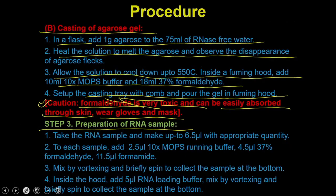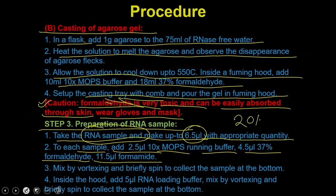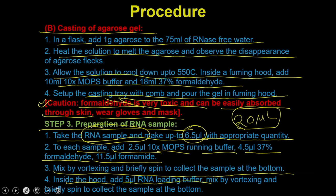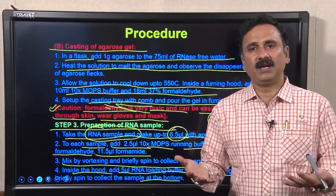In the next step, prepare the RNA samples: take the RNA sample and make up to 6.5 µl with the appropriate quantity. To each sample add 2.5 µl of 10x MOPS running buffer, 4.5 µl of 37% formaldehyde, and 11.5 µl of formamide. This makes a reaction mixture of 20 µl — mix by vortexing and briefly spin to collect the sample at the bottom. All this procedure is done under a fuming hood so you are not exposed to fumes from formaldehyde and formamide.